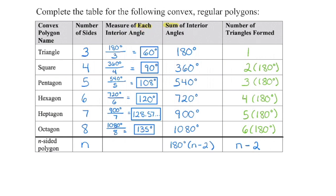To find each individual angle measure in a regular polygon, we take the total degrees within the figure and divide evenly among the number of angles. So the formula for each interior angle is [(n − 2) × 180] ÷ n. This formula gives us the total degrees within any polygon and the measure of each angle for regular polygons.